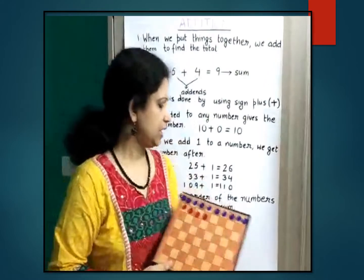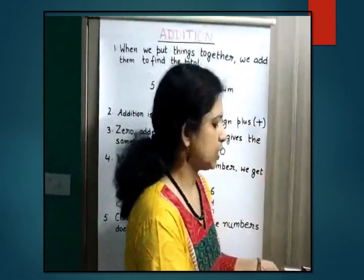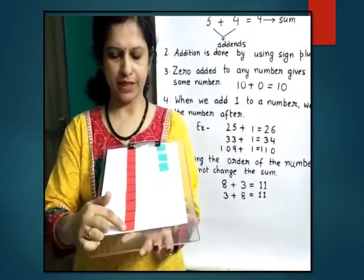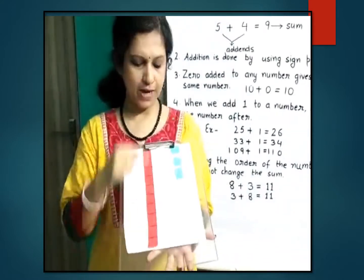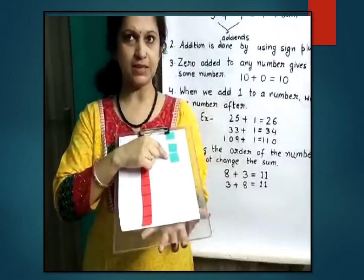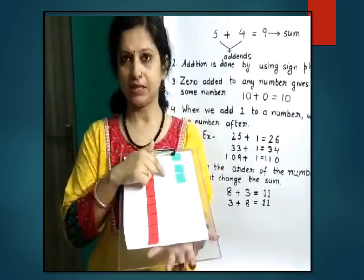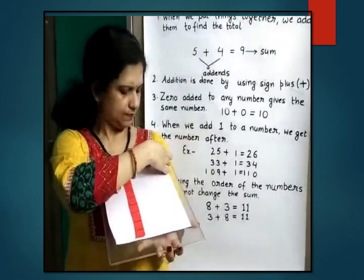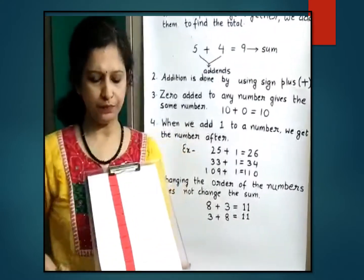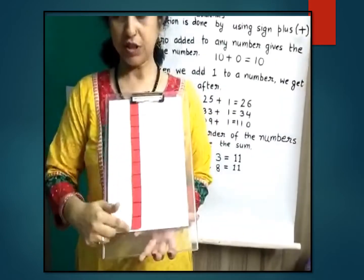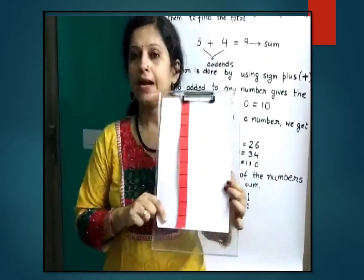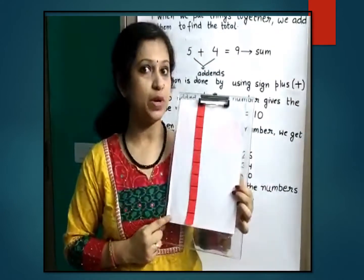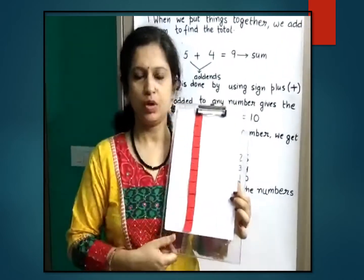Now let us understand this through grids and single blocks. This is a single grid of ten, meaning it is one ten. One ten plus three ones: ten plus three is thirteen. Now if I remove all these and ask you — I have ten apples and somebody gave me zero apples. How many apples do I have now? I have ten only, because nothing is added.